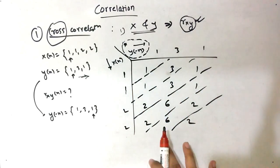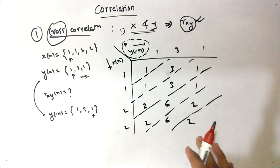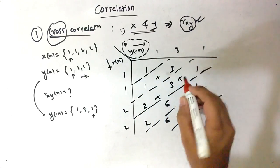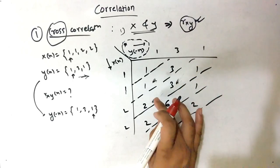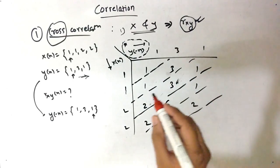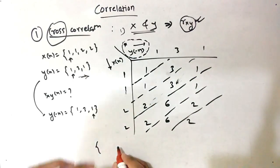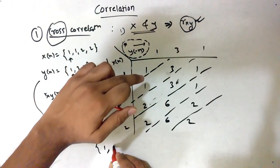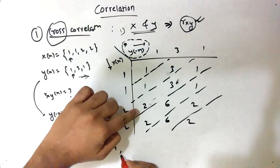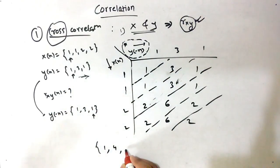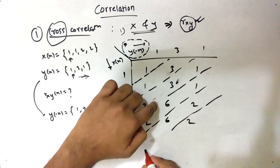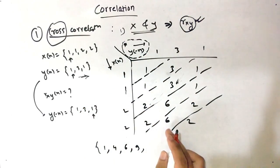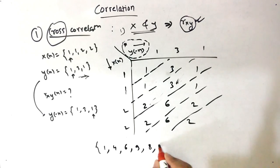Now we have to partition them in the cross diagonal direction and add up all those numbers. Adding diagonally: we get 1, then 1 plus 3 is 4, then 2 plus 3 plus 1 is 6, then 2 plus 6 plus 1 is 9, and then we get 7 and 2. Wait — we get 2 plus 6 is 8, 8 plus 1 is 9, and then 7 and 2.